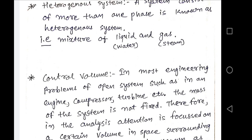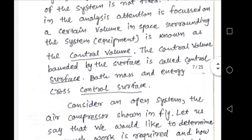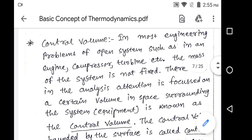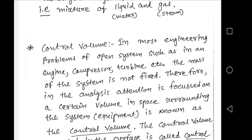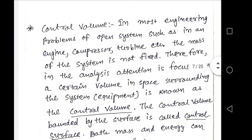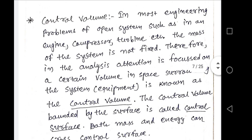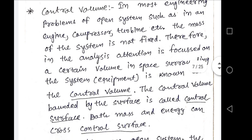Now, what is control volume and why is it required? There are three types of systems: open, closed, and isolated. In a closed system there is no problem because mass always remains constant. But in an open system there are problems because mass is not always available in a fixed amount — it is always flowing. So we cannot predict how much actual mass is available inside the system when we analyze an open system.